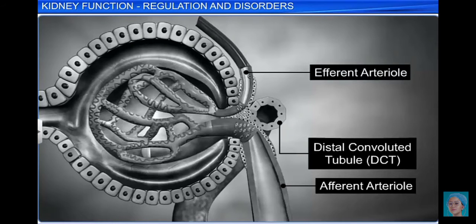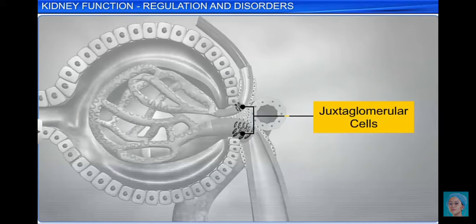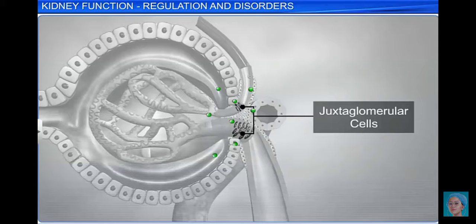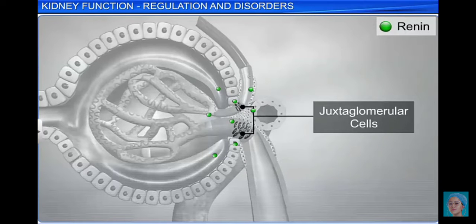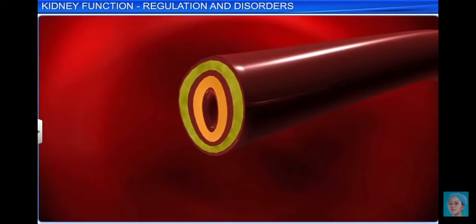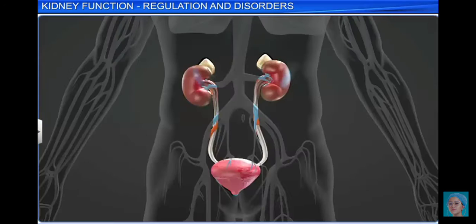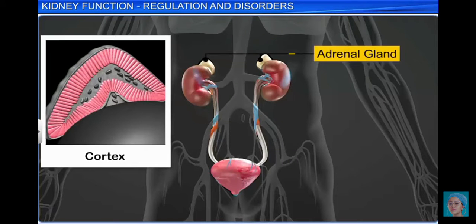Like the hypothalamus, the JGA also plays a vital role in regulating kidney functions. The juxtaglomerular cells detect a fall in the glomerular blood pressure or GFR and release a peptide hormone called renin. Renin converts angiotensinogen in the blood into angiotensin 1, which is further converted into angiotensin 2. Angiotensin 2, a powerful vasoconstrictor, constricts the blood vessels, thereby increasing blood pressure, which stimulates the cortex of the adrenal gland to secrete aldosterone.